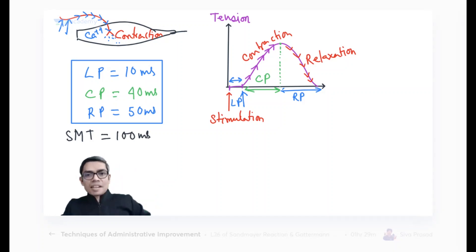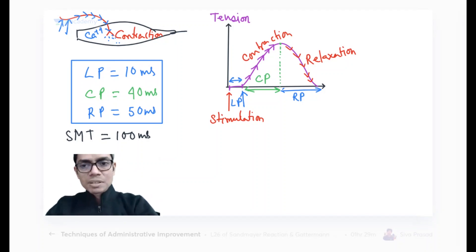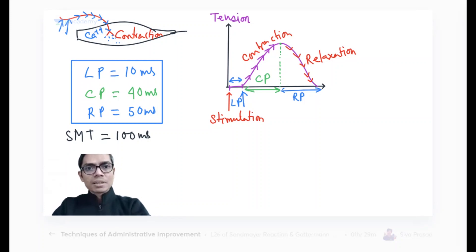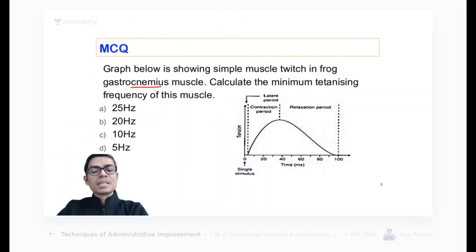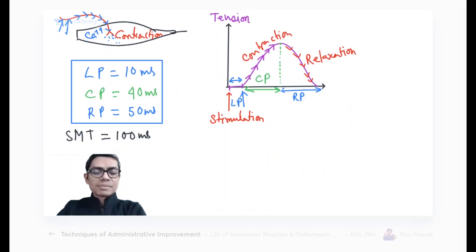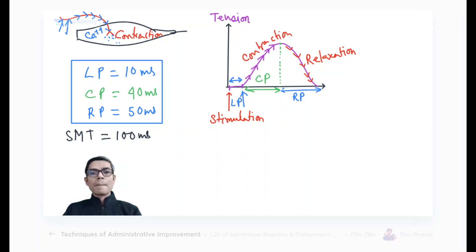These are the standard values for gastrocnemius muscles. We prefer the gastrocnemius for experiments because it is a big muscle and easy to separate. The standard value of simple muscle twitch is 100 milliseconds total duration. Now, rather than giving a single stimulation, if I give multiple stimulations, what is going to happen?